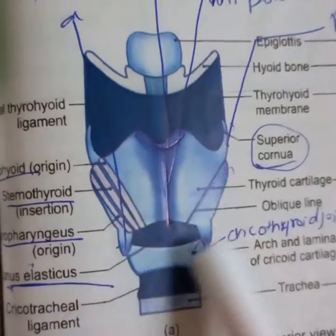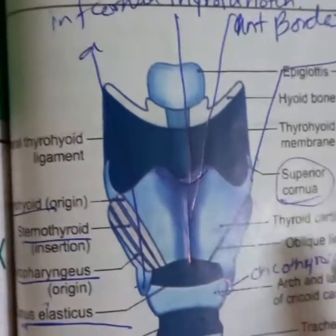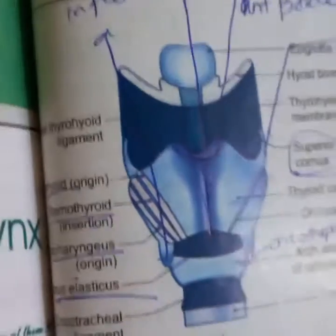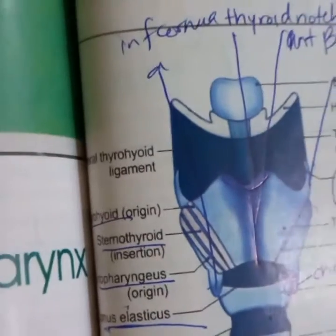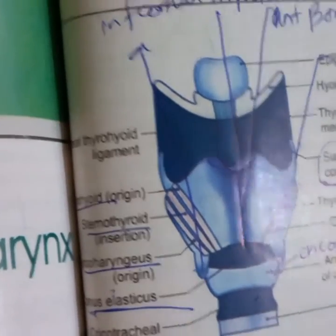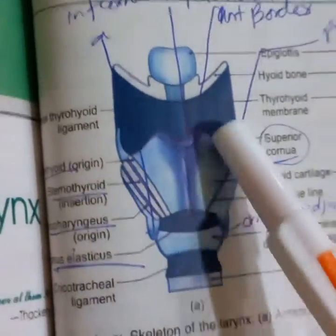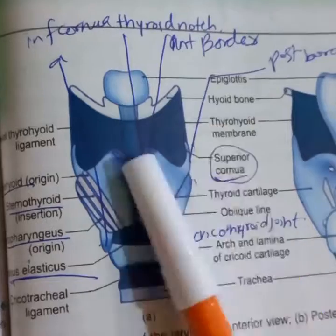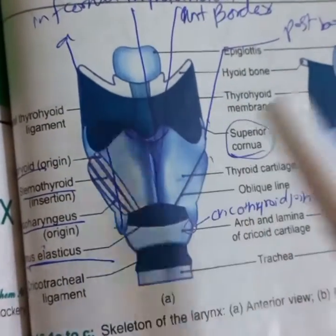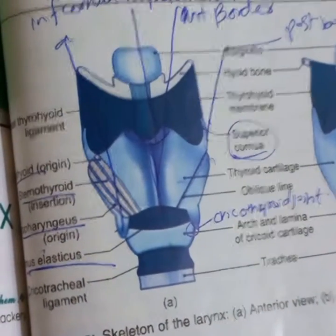The thyroid cartilage is V-shaped with right and left laminae that are posteriorly separated and anteriorly fused. This fusion is called the laryngeal prominence. The upper part forms the thyroid notch. The thyroid cartilage is attached to the hyoid bone via the thyrohyoid membrane, whose lateral part is thickened to form the thyrohyoid ligament.